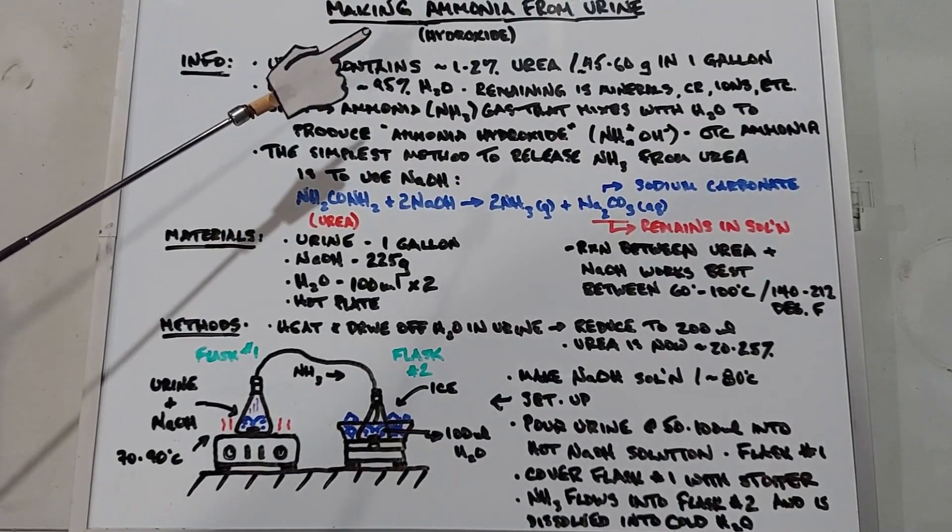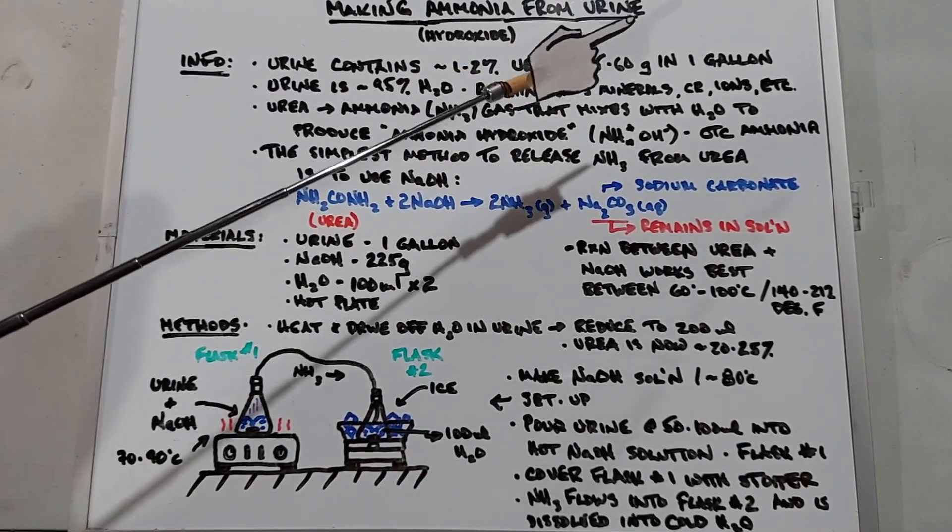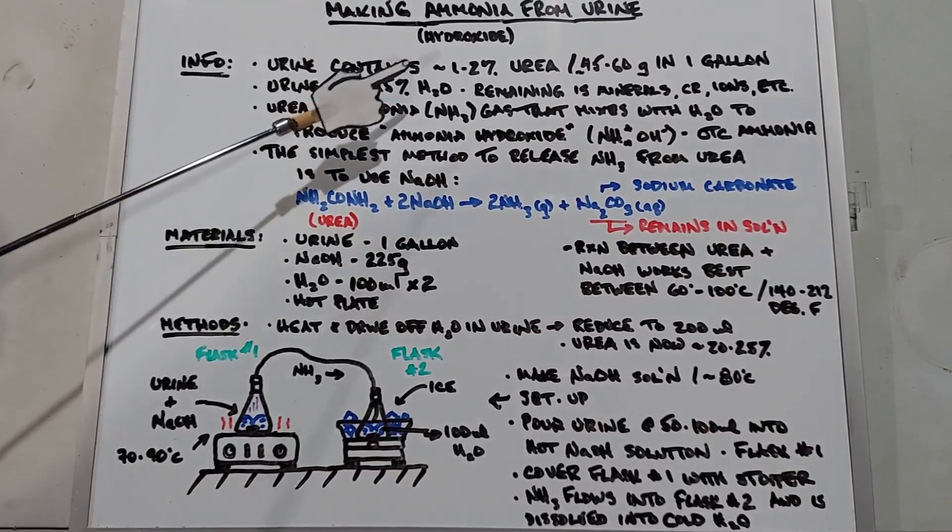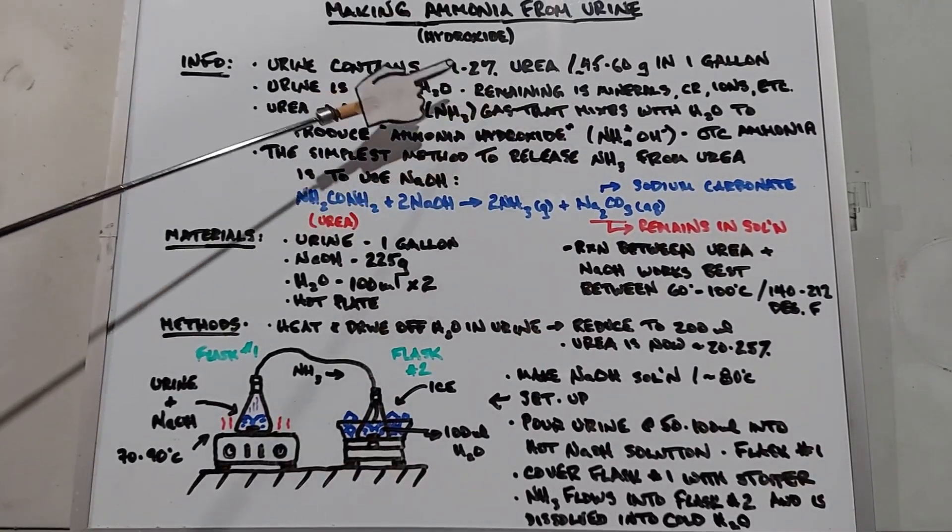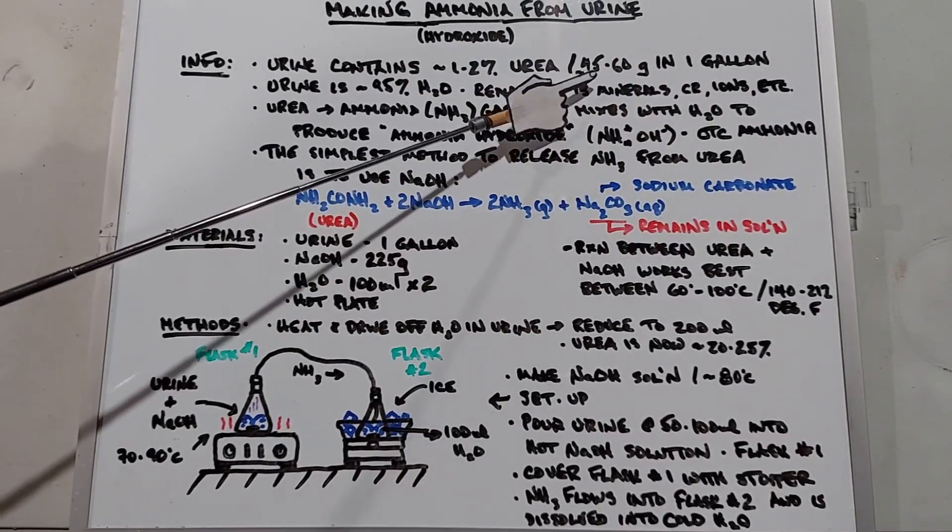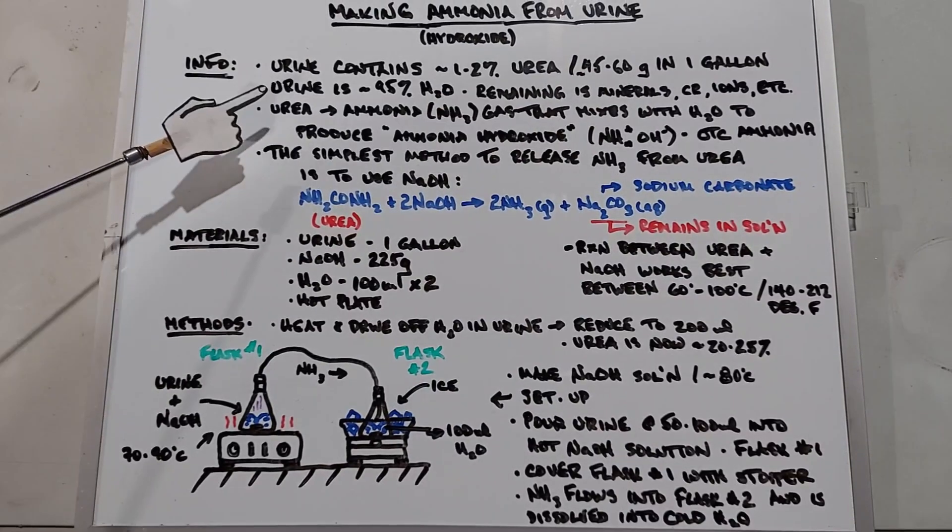In this video we're going to learn how to make ammonia hydroxide from urine. It's not a total surprise that urine contains urea at a rate of about one to two percent. So if you have a gallon of pee, you have somewhere between 45 and 60 grams of urea in that pee.